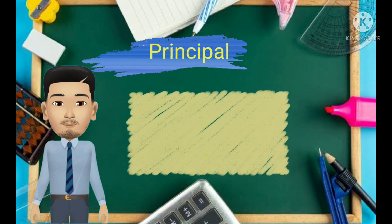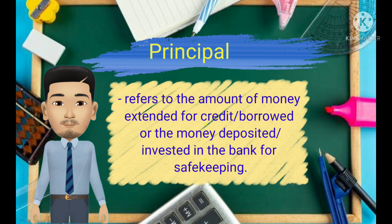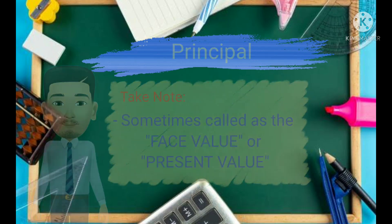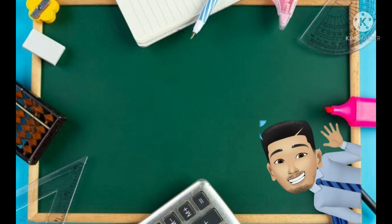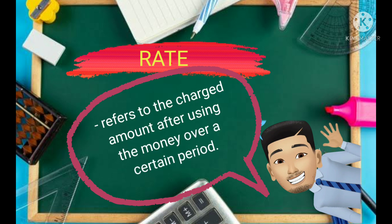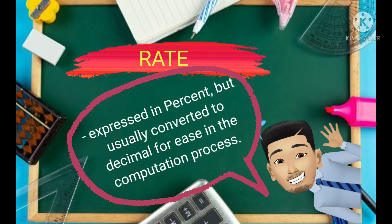Principal refers to the amount of money extended for credit, borrowed, or the money deposited or invested in the bank for safekeeping. The principal is sometimes called the face value or the present value. Rate refers to the charge amount after using the money over a certain period. The rate is usually expressed in percent, but converted to decimal for ease in computation.